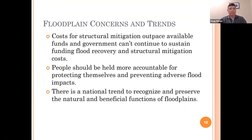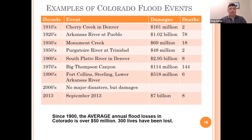It's important that people be held accountable for protecting themselves and preventing adverse flood impacts. There is a national trend to recognize and preserve the natural and beneficial functions of floodplains. Some examples of Colorado flood events: in 1910, Cherry Creek in Denver caused two deaths and $161 million in damages, up through 2013 with the northern and central Colorado flooding, where damages were $7 billion with eight lives lost. Since 1900, the average annual flood losses in Colorado are over $50 million and over 300 lives have been lost.